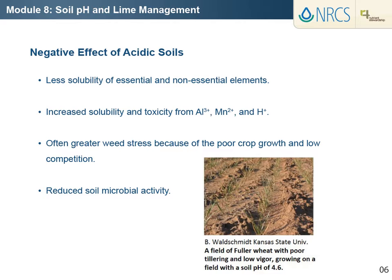Often, the field will also appear to be under greater stress from pests such as weeds, because of the poor crop growth and inability to compete. In addition to effects on solubility, microorganisms have varying optimal pH ranges just like plants. Therefore, if pH is too low or too high, microbial activity will diminish. This can affect important processes such as mineralization, nitrification, and breakdown of herbicides.